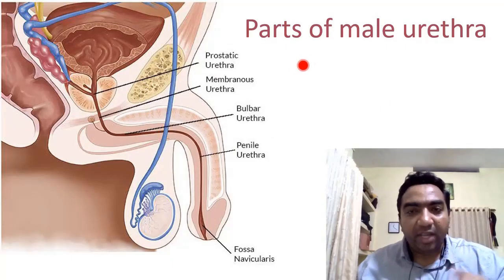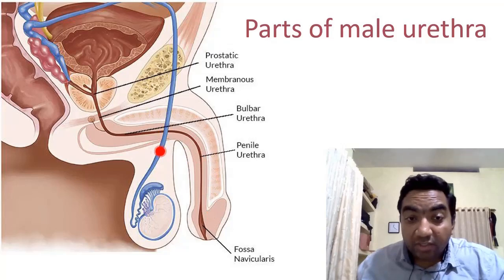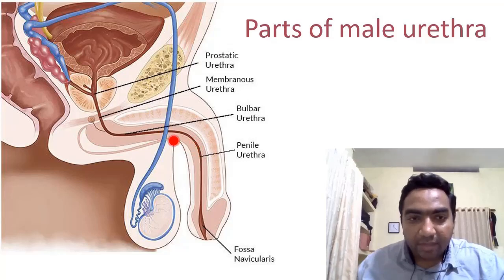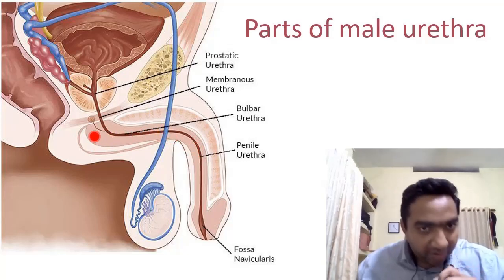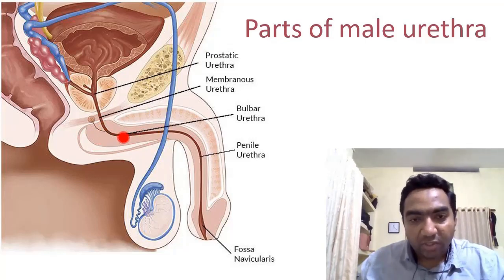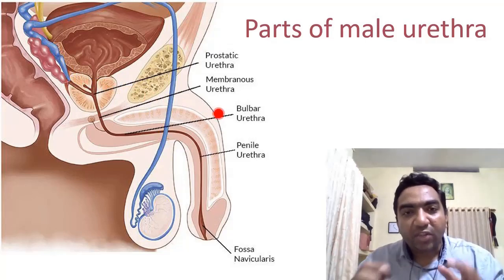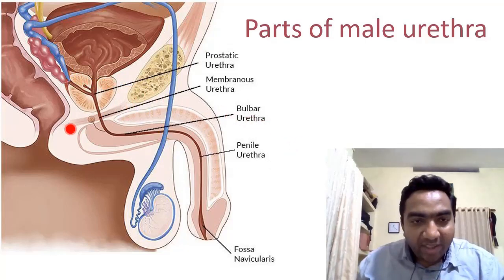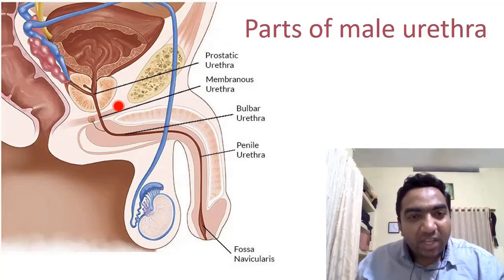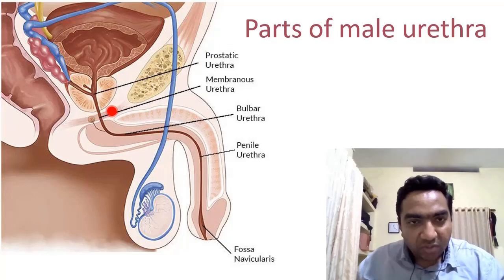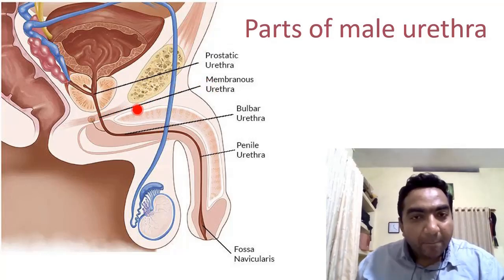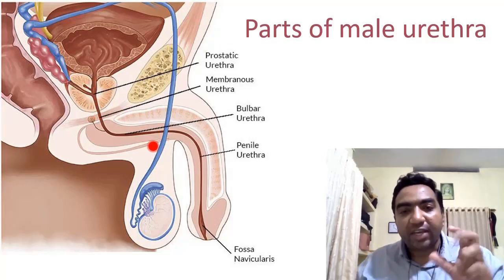Coming to the anatomy of the male urethra: the male urethra is long with a lot of bends. The part in the penis is the penile urethra. Near the bulbocavernosus and bulbospongiosus muscles is the bulbar urethra. The pelvic membrane — a continuation of the abdominal muscles into the pelvis, which includes the urinary sphincter — gives us the membranous urethra. The part passing through the prostate is the prostatic urethra. These are the four parts of the male urethra.